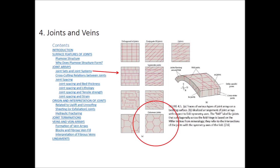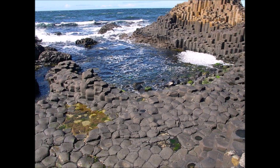I highlighted the columnar joint patterns because there is a World Heritage Site in Northern Ireland that has a beautiful example. This is an image from Wikipedia of the Giant's Causeway — an area of about 40,000 interlocking basalt columns that formed as the result of an ancient volcanic eruption. The tops of the columns form stepping stones that lead from the cliff foot and disappear under the sea. Most of the columns are hexagonal.